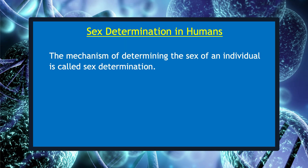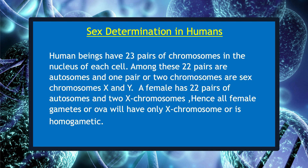The question may arise: what about the sex of organisms, also in humans — how does it come about in the next generations? Let us discuss sex determination. The mechanism of determining the sex of an individual is called sex determination. Human beings have 23 pairs of chromosomes in the nucleus of each cell. Among these, 22 pairs are autosomes and one pair — two chromosomes — are sex chromosomes X and Y. A female has 22 pairs of autosomes and two X chromosomes.